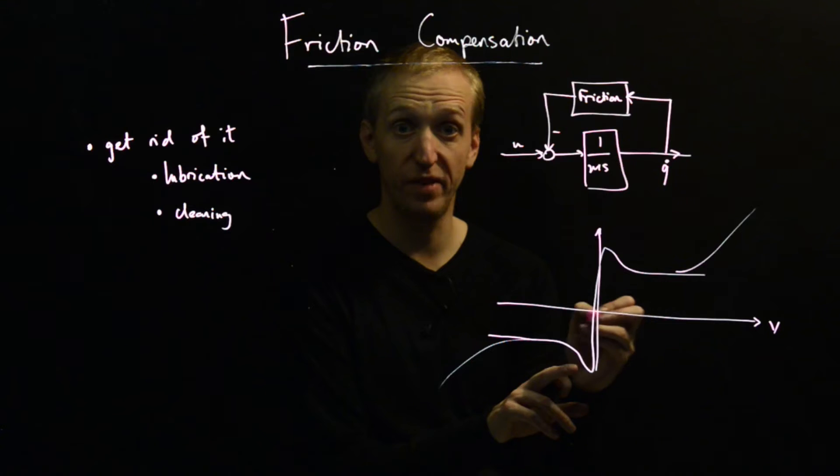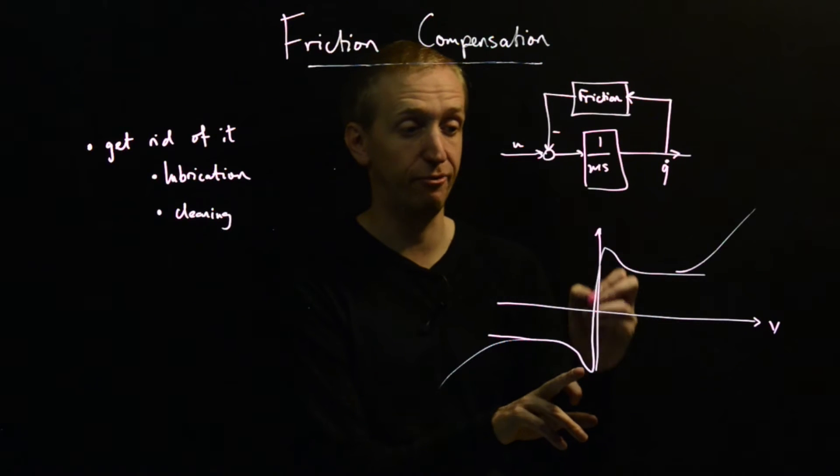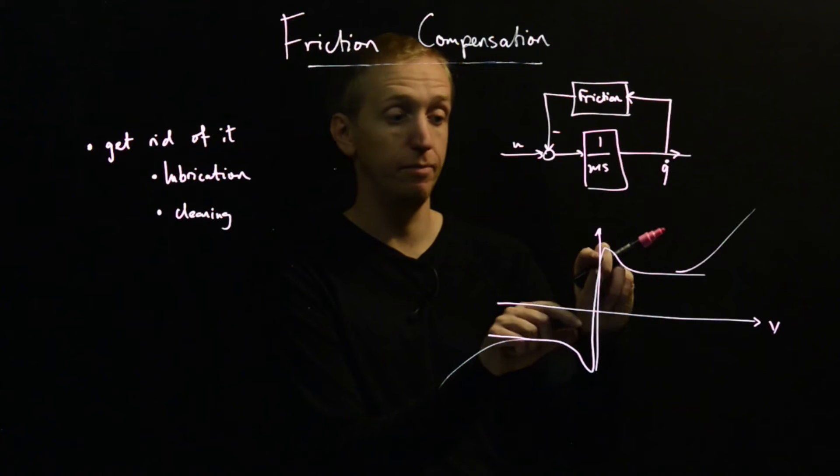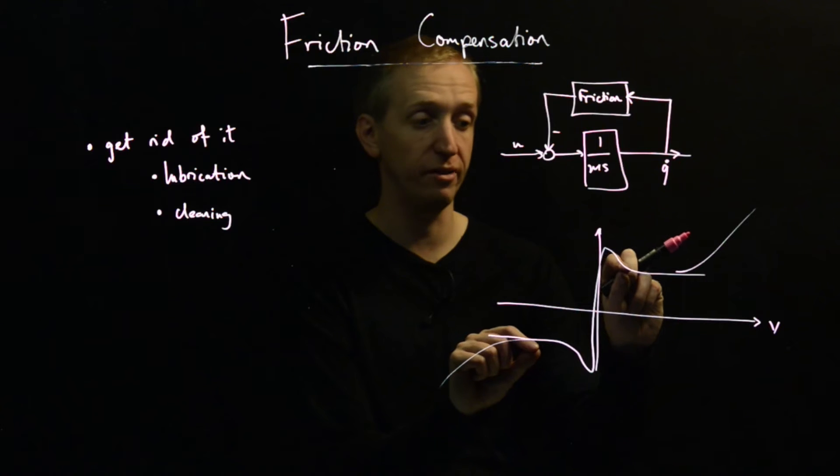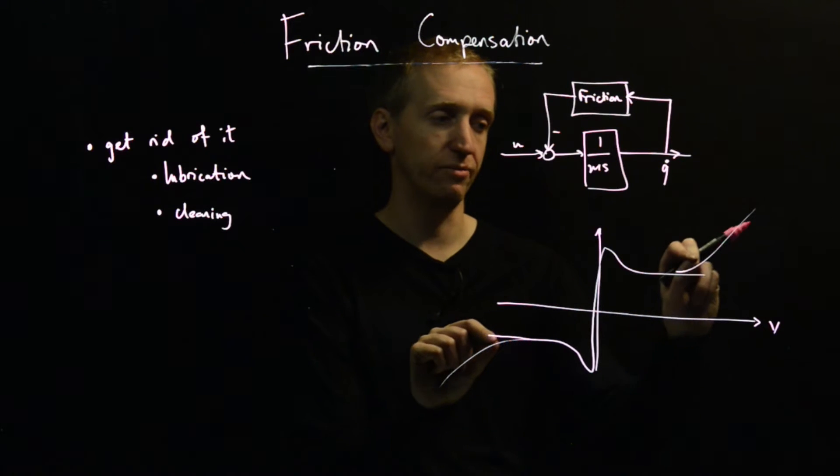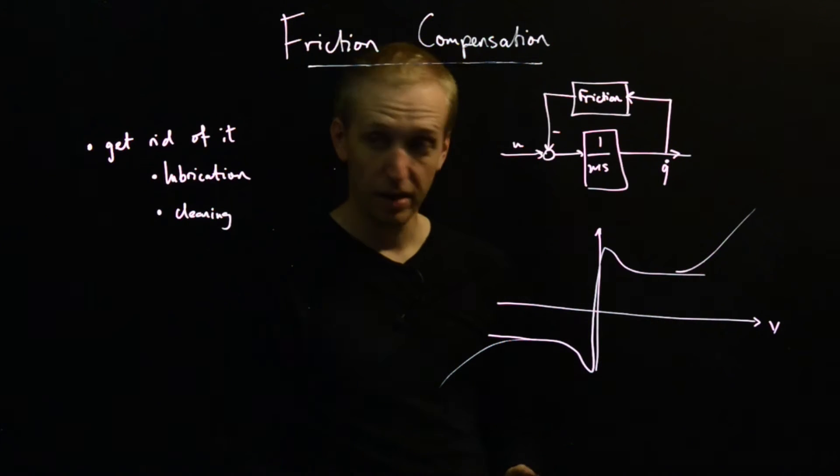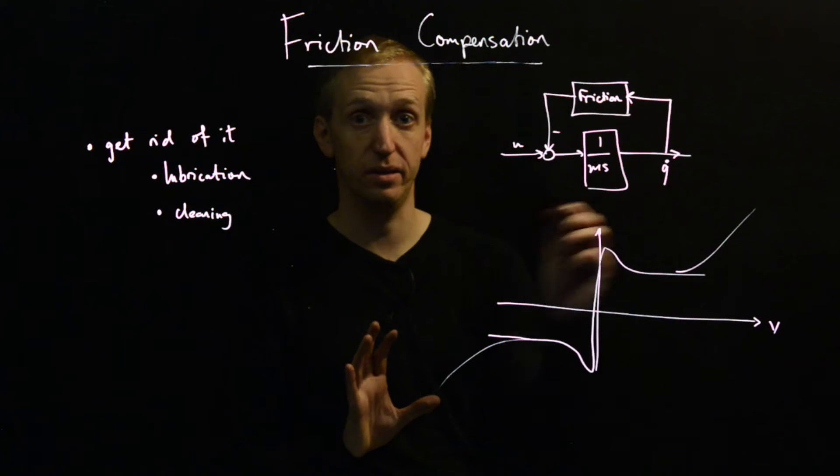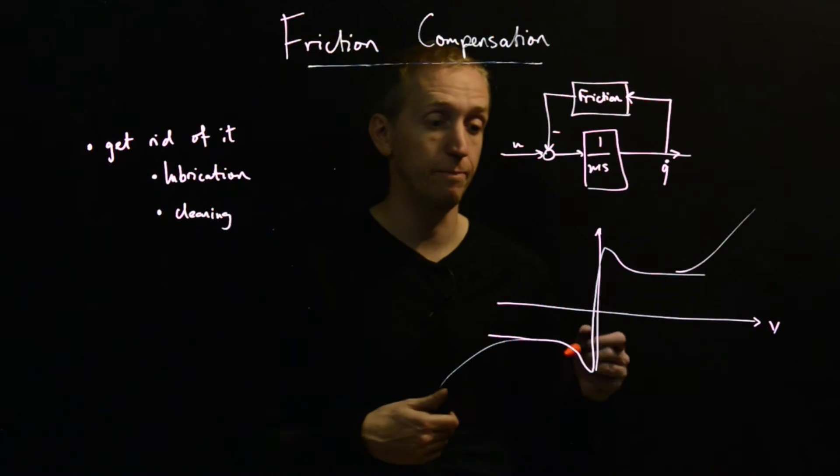We have this effect where, for very low velocities, you have this static friction, and eventually when you finally get things moving and you enter this dynamic regime, your friction forces drop off again, and this was the Stribeck effect. Eventually, as the velocity increases, maybe your friction forces start to come back up again. We're going to give very high-level advice for how to deal with this non-linearity, and it's going to be split into two cases.